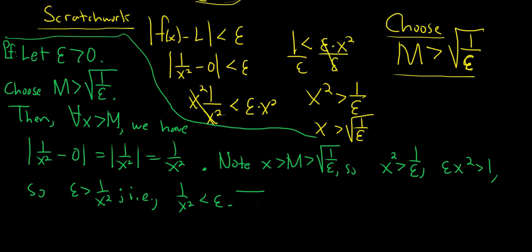1 over x squared is less than epsilon. So thus, let's just reiterate what we just did. The absolute value of 1 over x squared minus 0 is equal to 1 over x squared, which is less than epsilon. And that completes the proof.